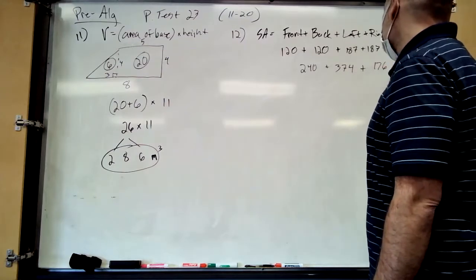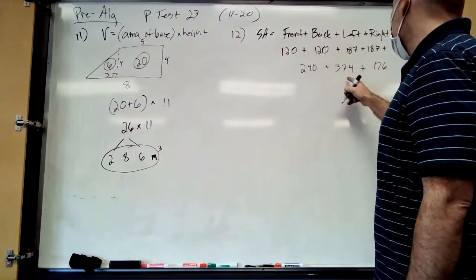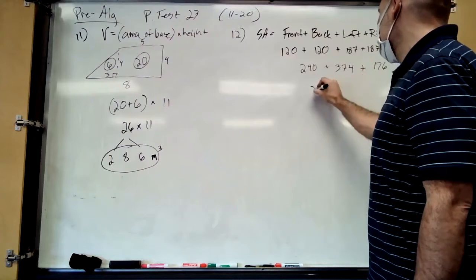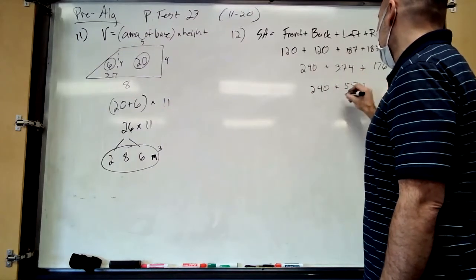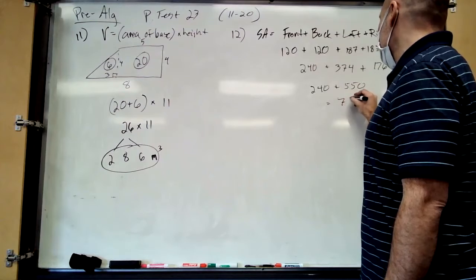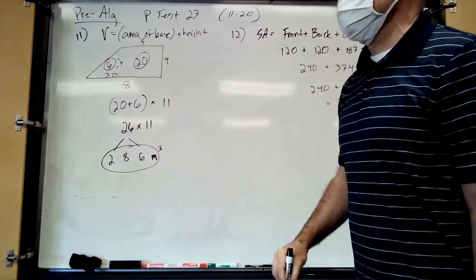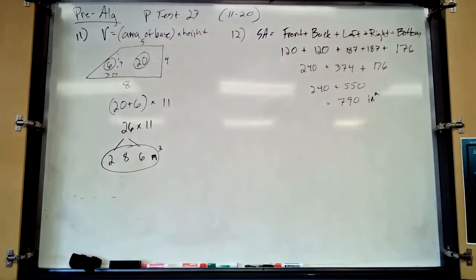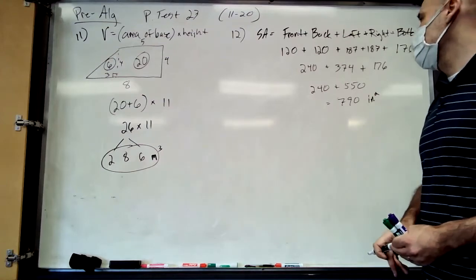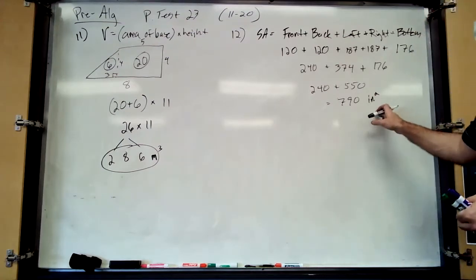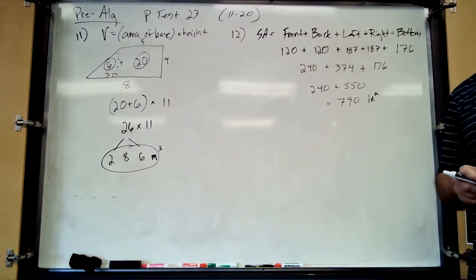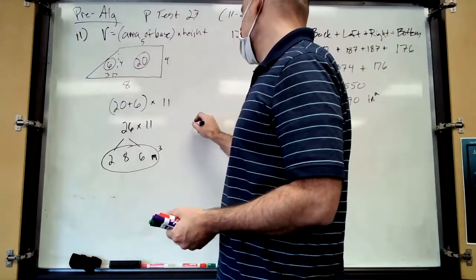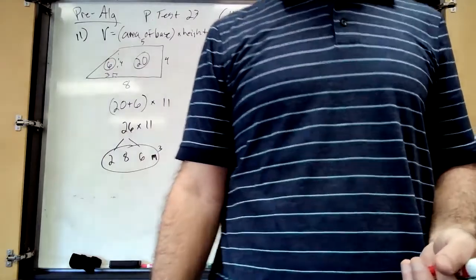So: 240 plus 374 plus 176. Let's see — 240 plus 550 is 790 square inches. Don't forget this label, guys — square units, because we're still finding area. So the surface area is 790 square inches.